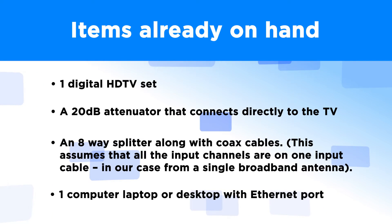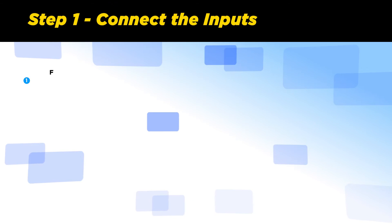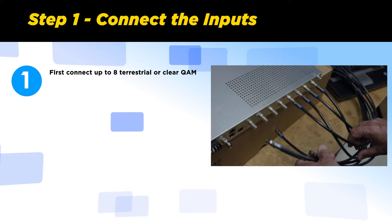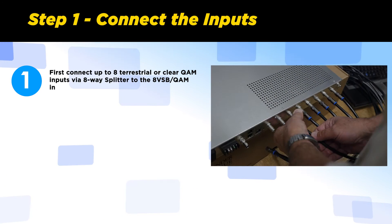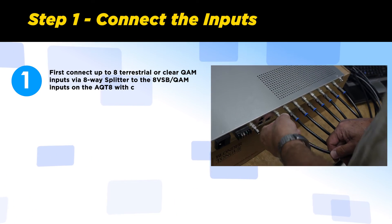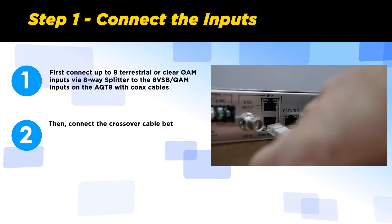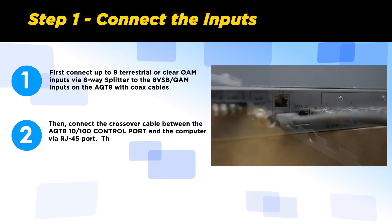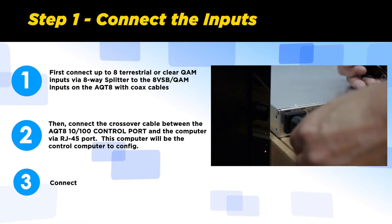Now that we have everything, let's get started. Step 1: Connect the inputs. Connect up to eight terrestrial or clear QAM inputs using the 8-way splitter to the eight VSB QAM inputs on the AQT8 with coax cables. Then connect the crossover cable between the AQT8 10/100 control port and the computer via the RJ45 port. Connect the power cord.